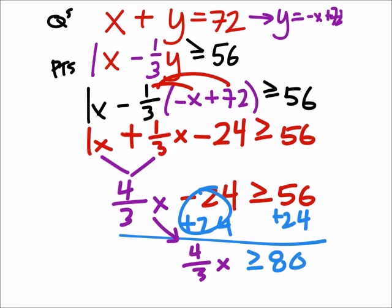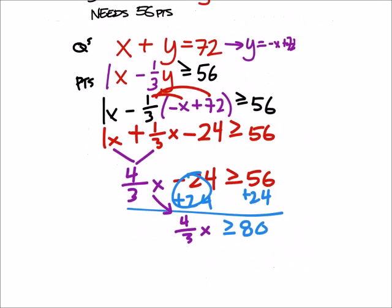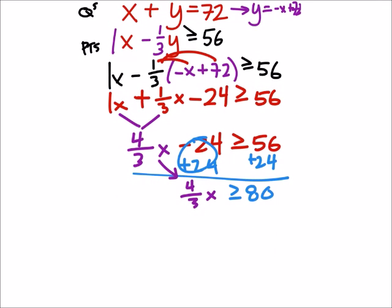We can do this in two steps or one. I'm just going to do it in one to save time. I'm going to divide both sides by the coefficient, divide by four-thirds, and that cancels out the four-thirds here, so I've got an X.